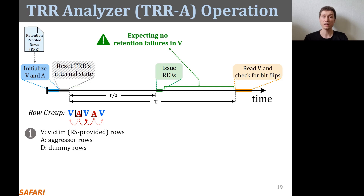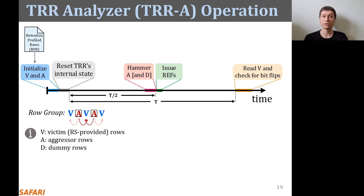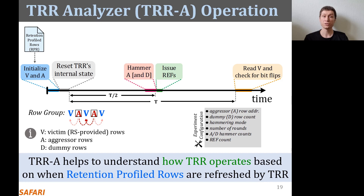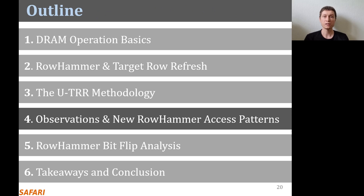TRR analyzer activates or hammers the aggressor rows. By hammering an aggressor row with an individual hammer count, TRR analyzer can understand how the hammers affect TRR's decisions on which rows to refresh. Along with the aggressor rows, TRR analyzer can also hammer dummy rows to analyze how to make aggressors undetected by TRR. A dummy row is a randomly selected row in the same bank that is not an aggressor or victim row. TRR analyzer provides various configuration parameters to study different access patterns, which we discuss in detail in the paper.